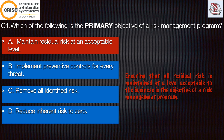Option C: remove all identified risk — this is incorrect because a risk management program is not intended to remove all identified risk. Similarly, Option D: reduce inherent risk to zero — this is incorrect because inherent risk, the risk level of an activity, business process, or entity without taking into account management actions, is always greater than zero.